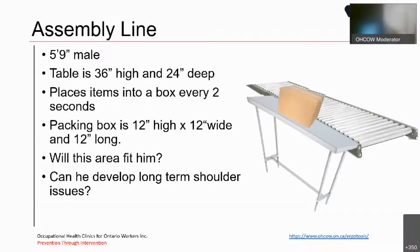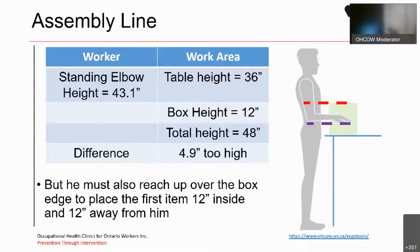Another example would be an assembly line. A 5'9 male is working at a table that is 36 inches high and 24 inches deep. He places items into a box every two seconds. The box itself is 12 inches high, 12 inches wide, and 12 inches long. Would the area fit them? And can he develop long-term shoulder issues? Well, the worker's standing elbow height from the tool would be 43.1 inches. And the table height is 36. The box height is 12 inches, so with a combined height of 48 inches. This means to be able to reach and place items into the box, it's about 5 inches too high for him. But remember, he must also reach up and over the box edge to place the first item 12 inches inside and 12 inches away from him.